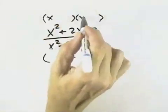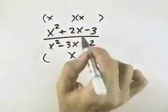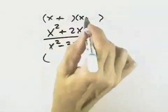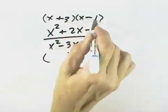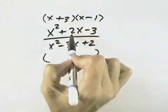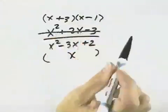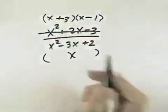In the numerator, we know that both factors of this trinomial will start with x. We know they'll have opposite signs. And if we try plus 3 and minus 1, that will give us a positive 2x in the middle. So we can factor the numerator into x plus 3 times x minus 1.